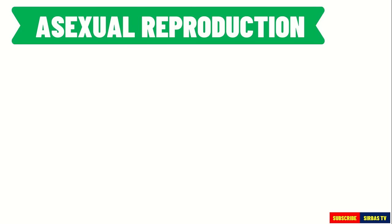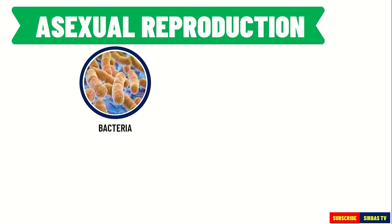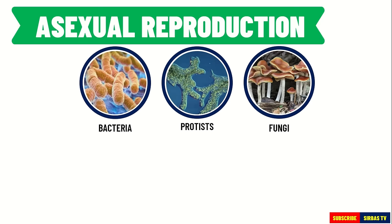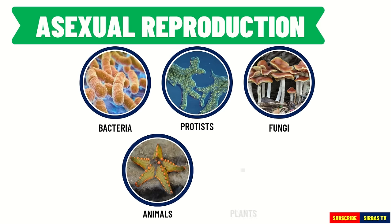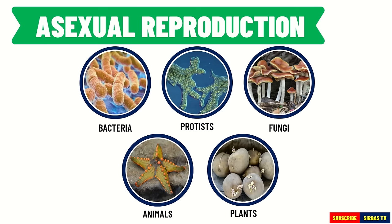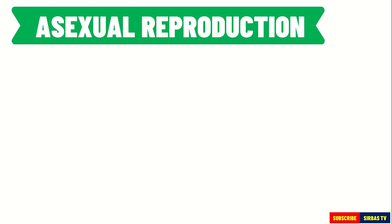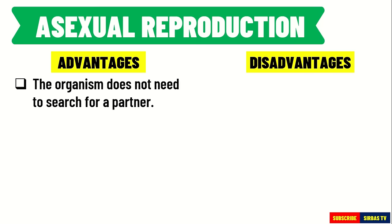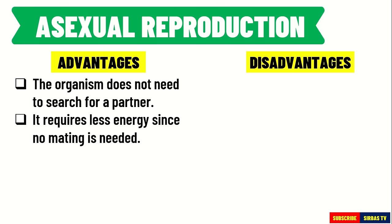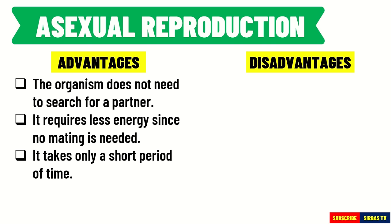Asexual reproduction is the main form of reproduction for unicellular organisms such as bacteria, protists, fungi such as mushroom, animals such as starfish, and plants such as potato. The advantages of asexual reproduction are the following: first, the organism does not need to search for a partner; second, asexual reproduction requires less energy since no mating is needed; and third, the time taken for asexual reproduction to complete takes only a short period of time.